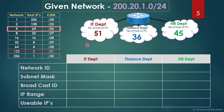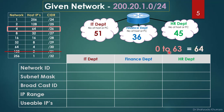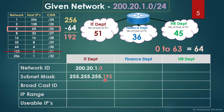Total IPs are 256, starting from 0 to 255. With 64 IPs per block, the first block is 0 to 63. The first IP, 200.20.1.0, is the network ID for the IT department. The subnet mask for /26 is calculated as 256 minus 64 equals 192, giving 255.255.255.192. The broadcast ID is the last IP in the block: 200.20.1.63.